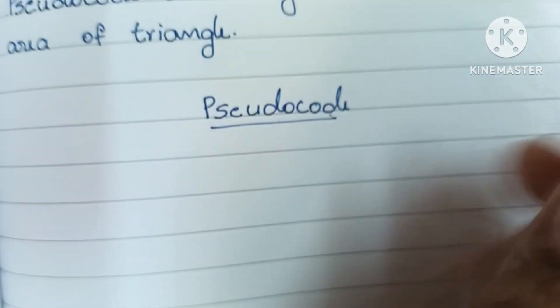This is the pseudocode and algorithm to find the area of a triangle. Thank you for watching. If you like this video please like and subscribe to my channel. Thank you and all the best.